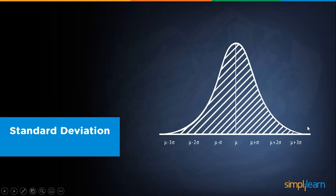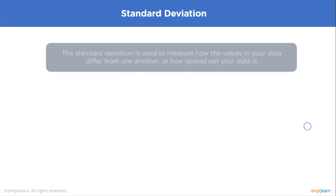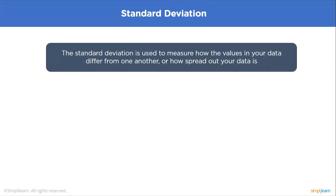Standard deviation is used to measure how values in your data differ from one another, or how spread out your data is. It is a statistic that measures dispersion of a data set relative to its mean, calculated as the square root of variance by determining each data point's deviation relative to the mean. If data points are further from the mean, there is a higher deviation within the data set.